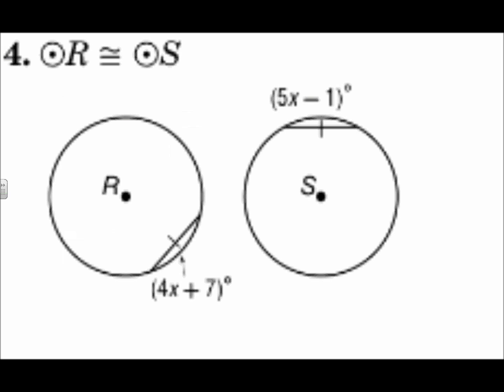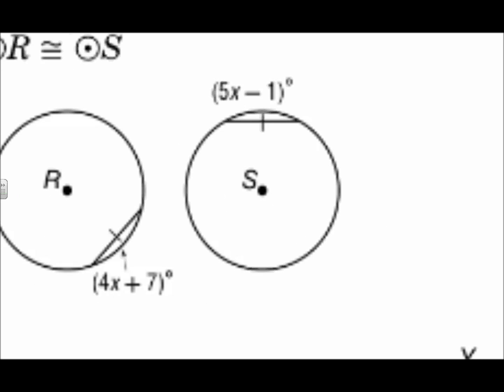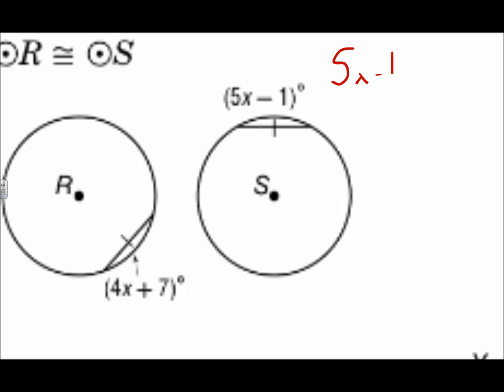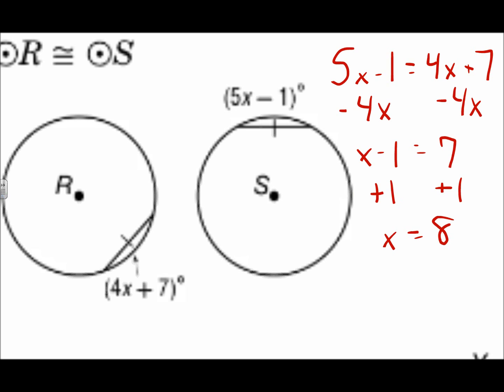For this one, they tell us that the two circles are congruent. If two circles are congruent and I have two chords on those circles that are congruent, that means the arc measures also have to be congruent. Because if the circles are congruent they can overlap, the chords are congruent, so the arcs are congruent. The equation is 5x minus 1 equals 4x plus 7. Subtract 4x from each side, then add 1, and x is 8. When two chords are congruent the arcs are congruent, and if two circles are congruent then their pieces are the same as well.